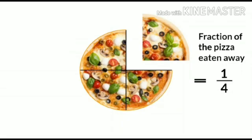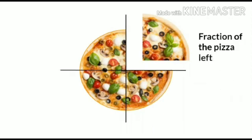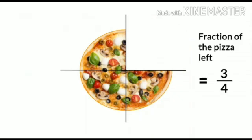Here, the numerator is the part being eaten away, and the denominator is the total number of parts, that is four. Can you say what fraction of the pizza is left here? Yes, you are right. Three by four of the pizza is left here.